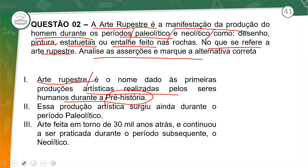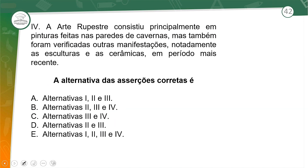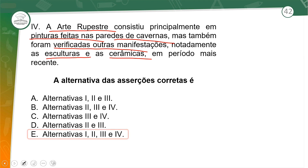Essa produção artística surgiu ainda durante o período paleolítico? Será que surgiu só no paleolítico, ou continuou antes e depois? Arte feita em torno de 30 mil anos atrás e continuou a ser praticada durante o período subsequente do neolítico. A arte rupestre consistiu principalmente em pinturas nas paredes de cavernas, mas também em esculturas, cerâmicas e em períodos mais recentes. Todas as asserções — um, dois, três e quatro — estão corretas em relação à arte rupestre.